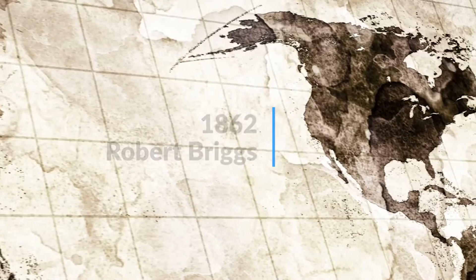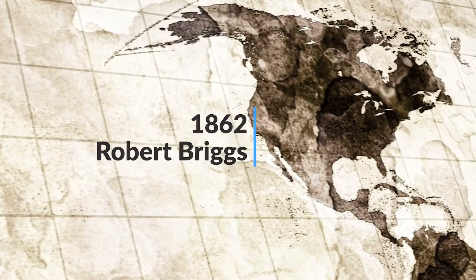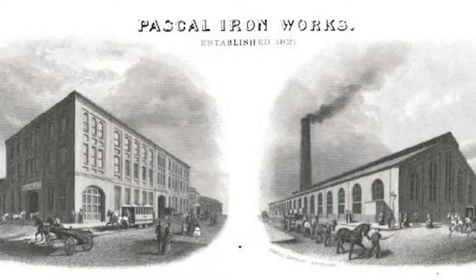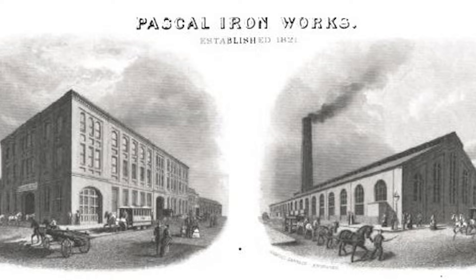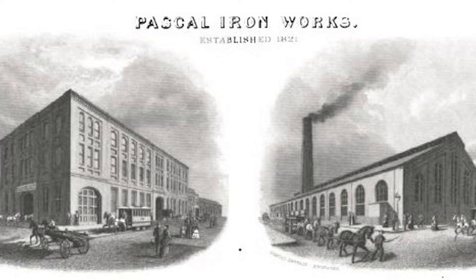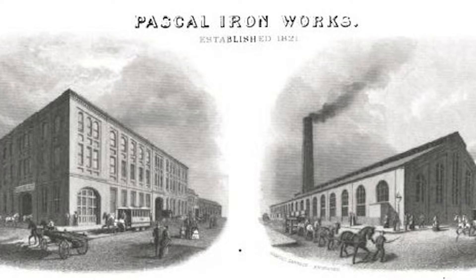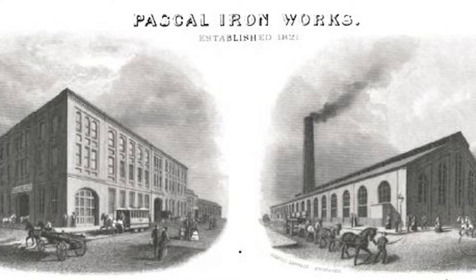We're going to look back to 1862. There was a gentleman named Robert Briggs. Robert Briggs worked at a pipe mill called Pascal Ironworks in Philadelphia, Pennsylvania. He came up with the standard sizes for half inch through 4 inch, specifically to get to the ID.